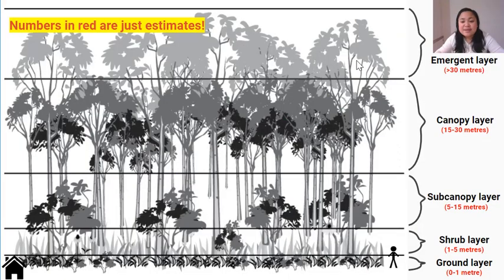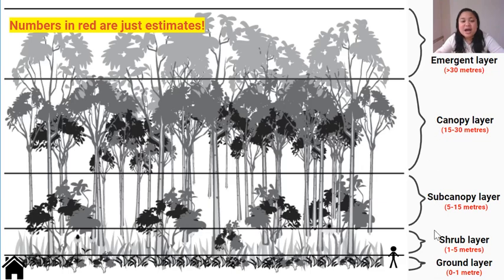This is a diagram that clearly shows the five layers of a stratified forest in New Zealand: the ground layer, shrub layer, sub-canopy layer, canopy layer, and emergent layer. Note that the numbers in red are just estimates of the heights of these layers.